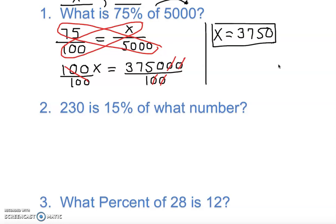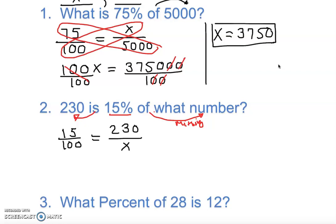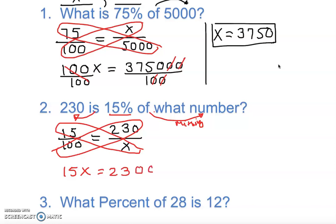Problem two: '230 is 15% of what?' Here the 'is' value (230) is given, the percentage (15%) is known, and the 'of' value is missing — that's our X. We set up 15 over 100 equal to 230 over X. Cross-multiplying gives 15X equals 23,000 — notice there are three zeros.